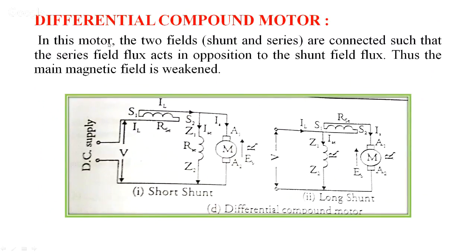In a differential compound motor, the two fields — shunt and series — are connected such that the series field flux acts in opposition to the shunt field flux. Thus the main magnetic field is weakened. The flux due to the series field winding and the flux due to the shunt field winding are opposite to each other, making it a subtractive field rather than an additive field. Differential compound motors can be connected in either short shunt or long shunt configuration.